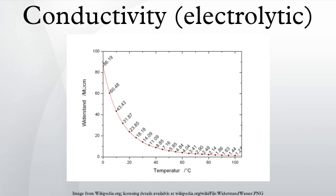The electrical conductivity of a solution of an electrolyte is measured by determining the resistance of the solution between two flat or cylindrical electrodes separated by a fixed distance. An alternating voltage is used in order to avoid electrolysis. The resistance is measured by a conductivity meter. Typical frequencies used are in the range 1-3 kHz. The dependence on the frequency is usually small, but may become appreciable at very high frequencies, an effect known as the Debye-Falkenhagen effect.